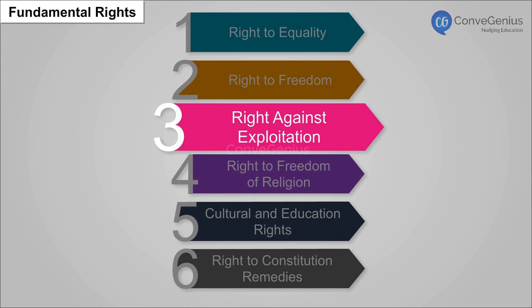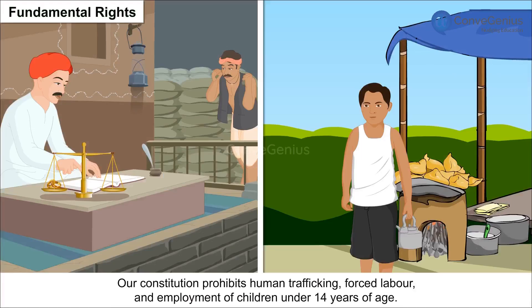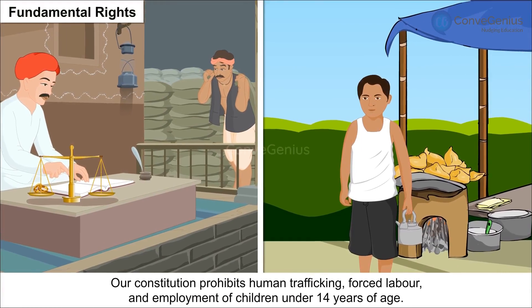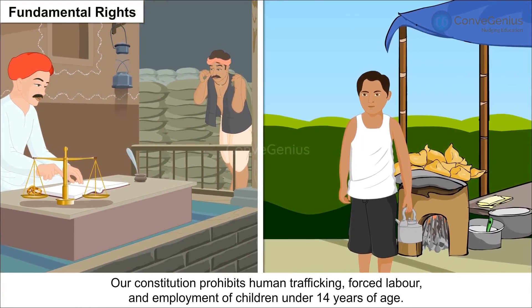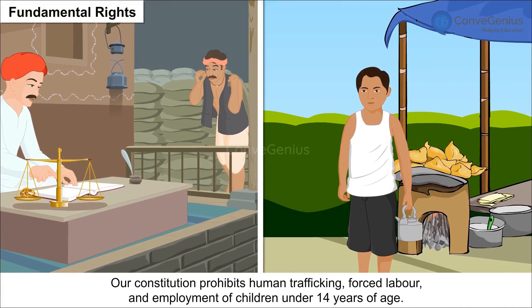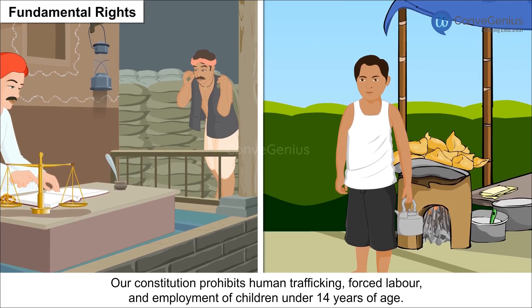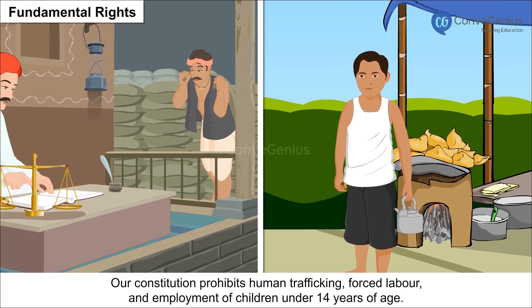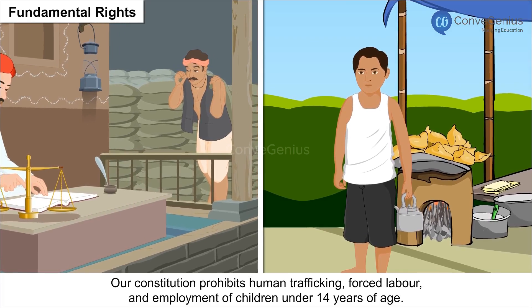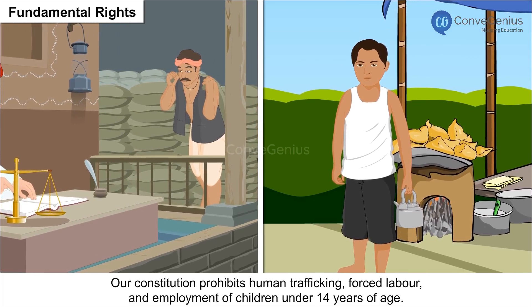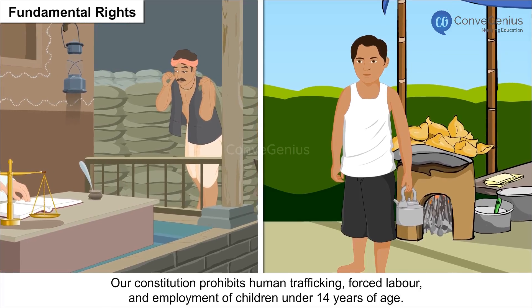3. Right against Exploitation: The Constitution prohibits human trafficking, forced labour, and employment of children under 14 years of age.